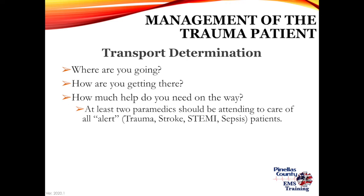For transport determination: Where are we going? How are we getting there? How much help do we need? At least two paramedics should be attending to all alert patients — trauma alert, stroke alert, STEMI alert, and sepsis alert. If the patient requires a trauma center, which is the closest? If there's going to be a delay in accessing or transporting the patient, air transport may be the better choice.